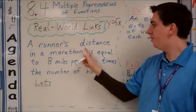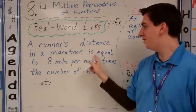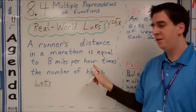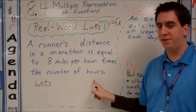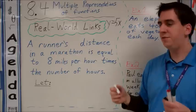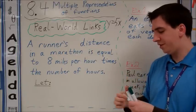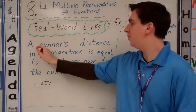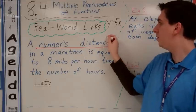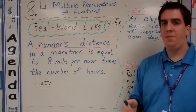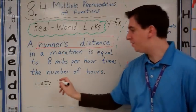Let's look at this one together. A runner's distance in a marathon is equal to 8 miles per hour times the number of hours. We have two things going on: we have the runner's distance and we also have the number of hours.